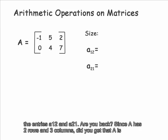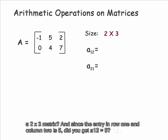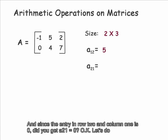Are you back? Since A has 2 rows and 3 columns, did you get that A is a 2 by 3 matrix? And since the entry in row 1 and column 2 is 5, did you get A sub 12 equals 5? And since the entry in row 2 and column 1 is 0, did you get A sub 21 equals 0?